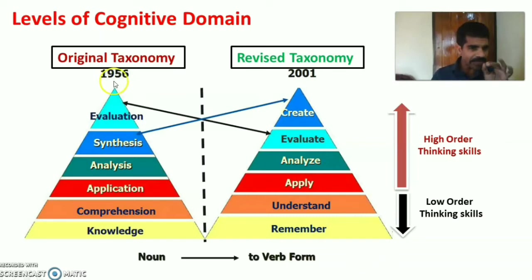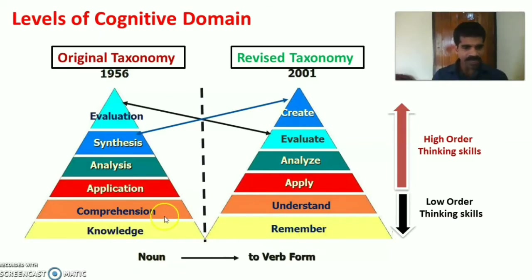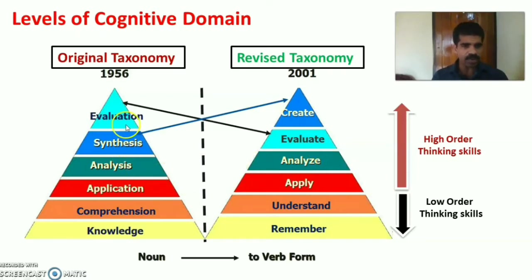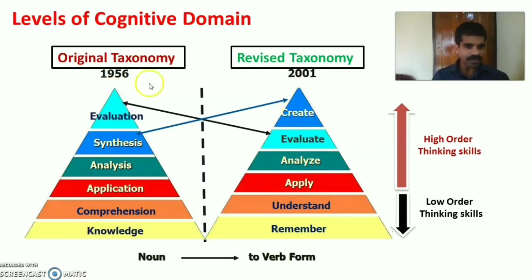The original taxonomy was made in 1956 but later revised in 2001. In 1956 the taxonomy used noun form, and in 2001 it was replaced by verb form. So knowledge is replaced by remember, comprehension by understand, application by apply, analysis by analyze. Then synthesis and evaluation are replaced — in 2001, after analyze comes evaluate, and last is create instead of synthesis.